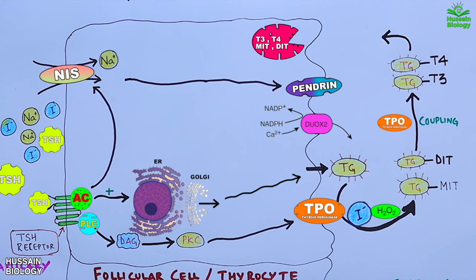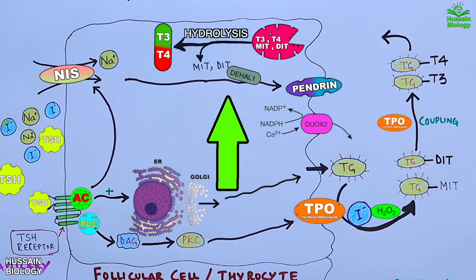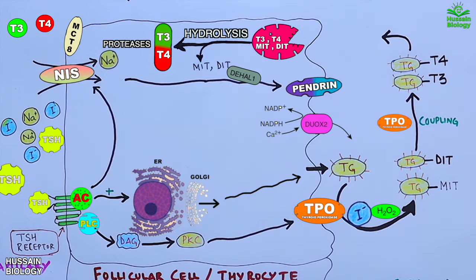Specific proteases hydrolyze the thyroglobulin molecule in the phagolysosome, releasing MIT, DIT, T3, and T4. The MIT and DIT are deiodinated by DEHAL1, which recycles the iodine back. Finally, toward the basal membrane, T3 and T4 are acted upon by proteases and the free T3 and T4 molecules are released into the bloodstream via the MCT8 transporter protein.